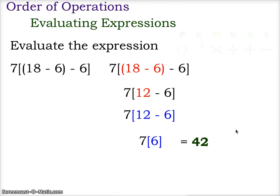So again, we did the innermost grouping symbols first — the 18 minus 6 — which gave us 12. Then we did the next grouping symbol, 12 minus 6, giving us 6. And then 7 times 6, giving us 42.